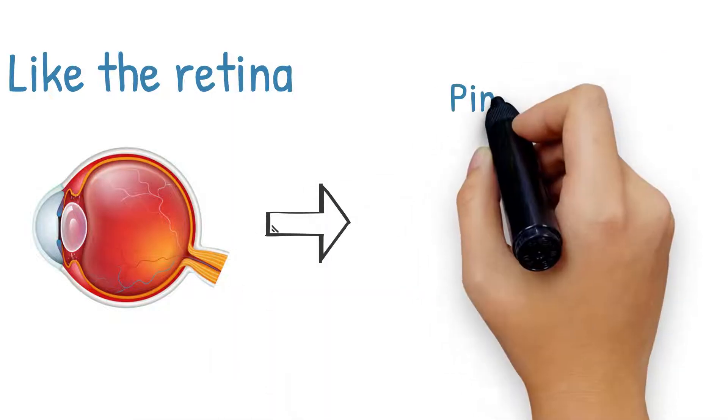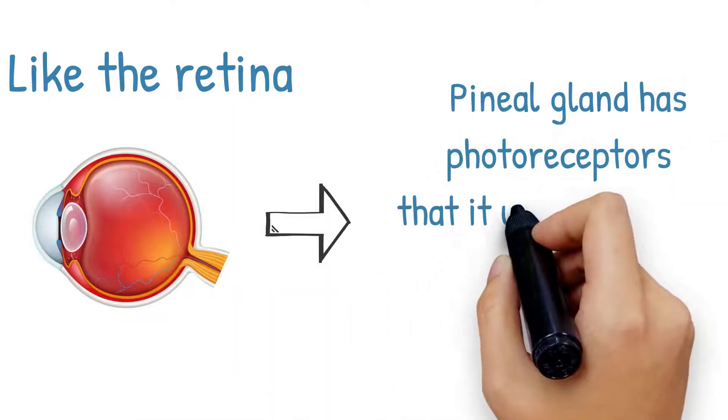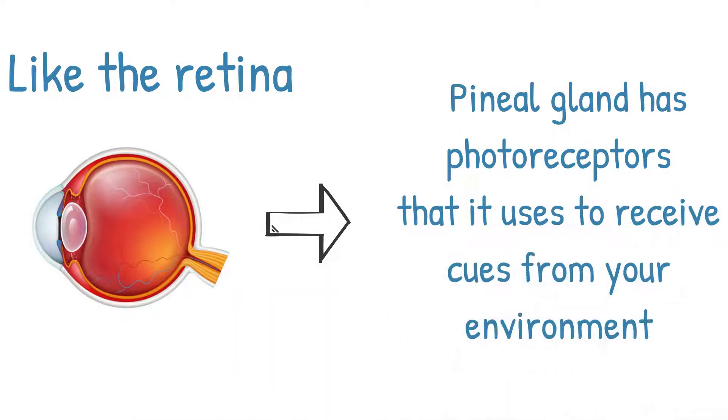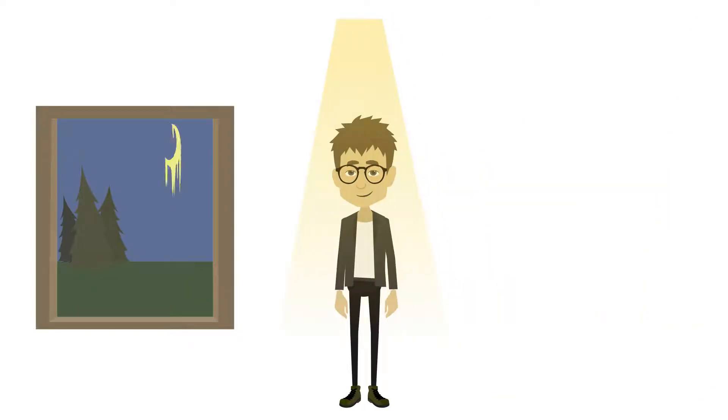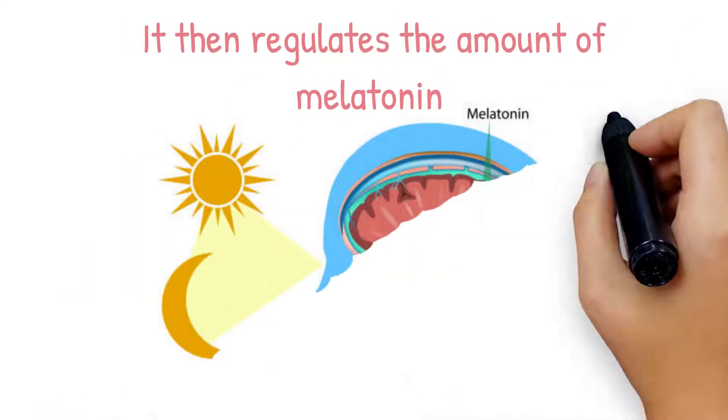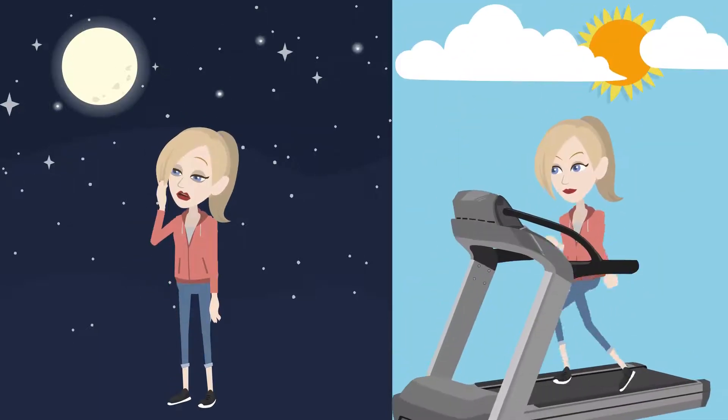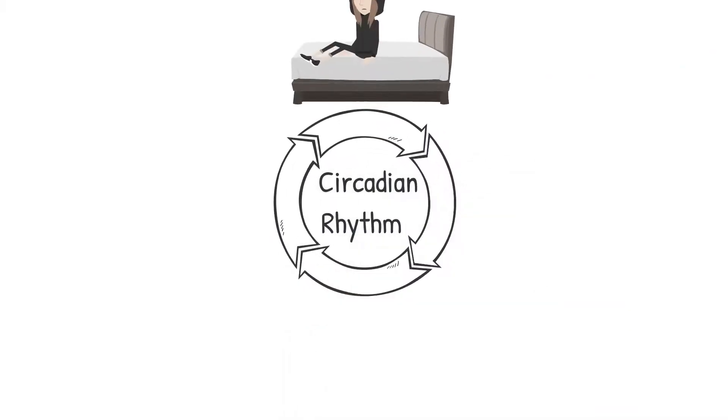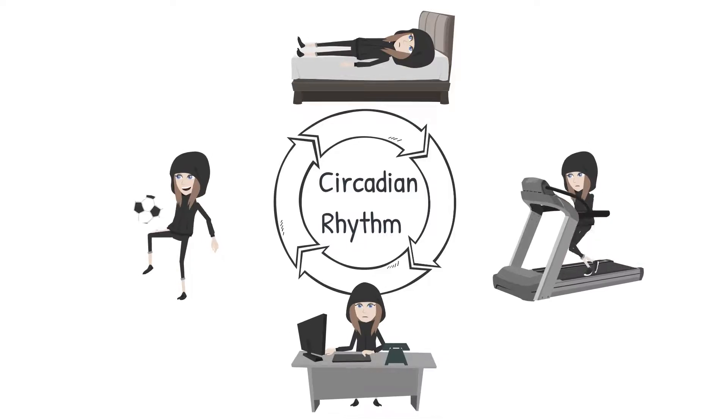Like the retina, the pineal gland has photoreceptors that it uses to receive cues from your environment like time of day, amount of light, and the season. It then regulates the amount of melatonin so that you feel sleepier at night and more active during the day. This is known as the circadian rhythm and it's essential to your survival.